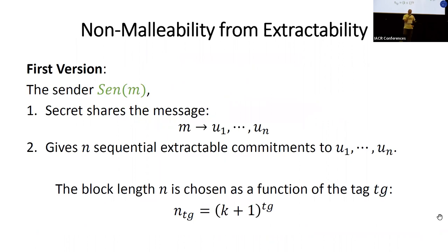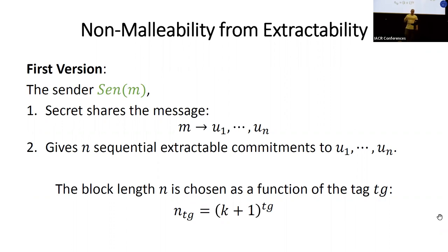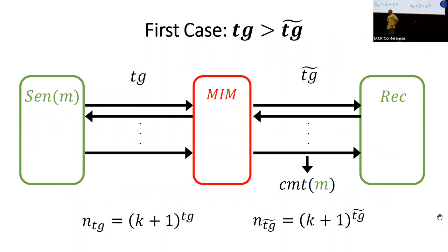Here is the first version of the protocol. The sender first secret-shares the message m into n shares, then takes each share and gives an extractable commitment to it sequentially: u1, u2, through u_n. The block length n — also the number of secret shares — is picked as a function of the tag: it equals (k+1)^tag, where k is the number of messages in the extractable commitment. Since k is constant (constant-round protocol) and we have a constant number of tags, everything here is constant.